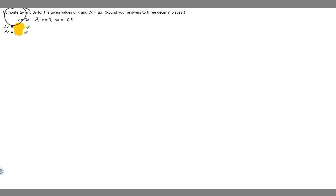In this problem we're told to compute delta y and dy for the given values of x. dx is equal to delta x. Round your answers to three decimal places.